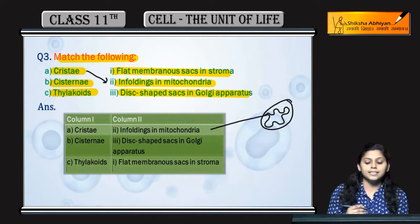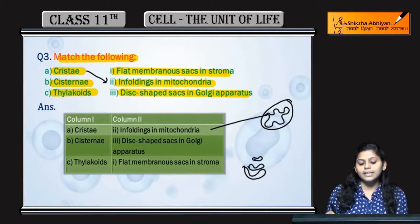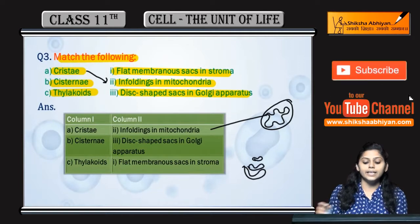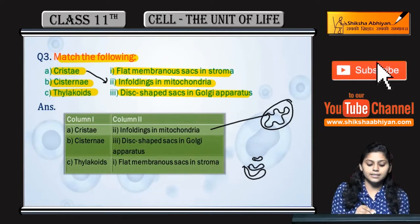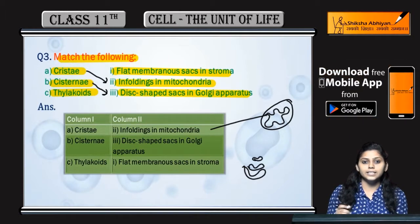Next is cisternae. Golgi apparatus mein ye joh sack-like structures hai, inhye bolte hai cisternae. Toh Golgi apparatus ki disc shaped sacs kya huye? Cisternae.